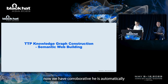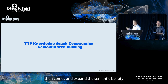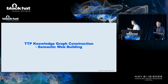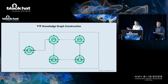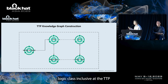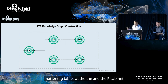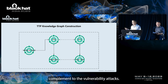Now we have TTPs extracted automatically. Moving to the next part: the semantic web building. Our TTP knowledge graph includes three core parts: the TTPs and MITRE ATT&CK playbooks, and the NVD and PCAP data complemented to the vulnerability attacks.